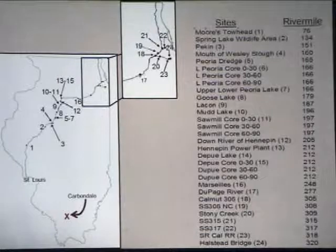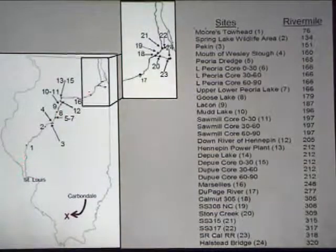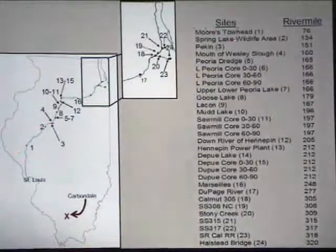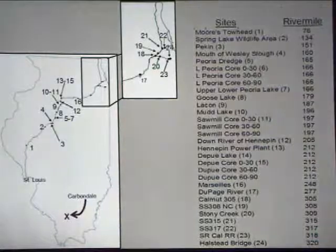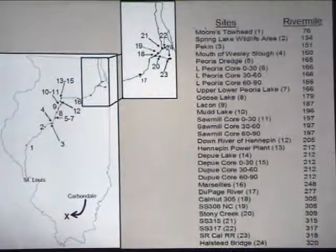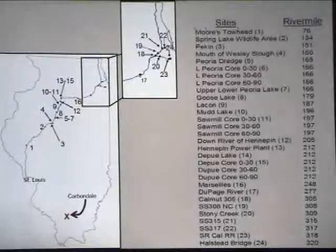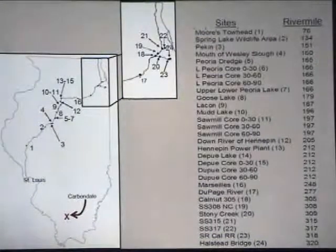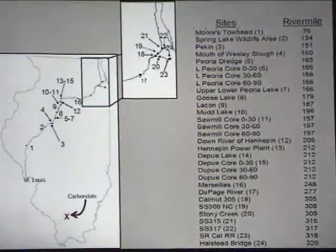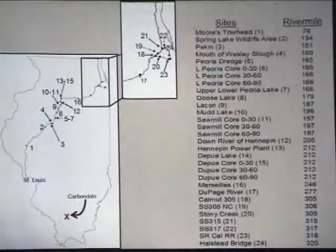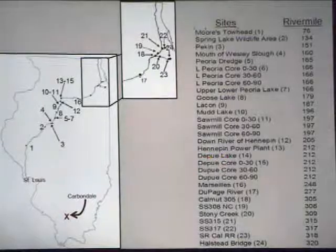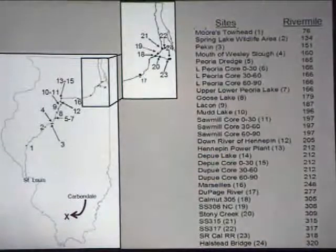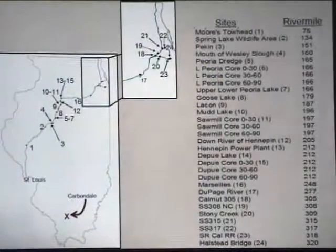We're down in Carbondale. Our first sampling site was at Morristown Head at River Mile 76, and we sampled all the way up to Halstead Bridge at River Mile 320. John was interested in checking sediment cores at Peoria Lake, Sawmill Lake, and Depew Lake, providing sediments at 3, 6, and 9 foot increments. None of those cores were actually toxic, as we'll see.